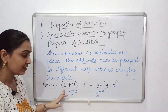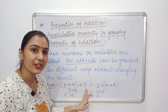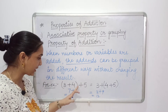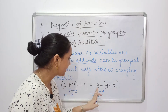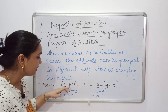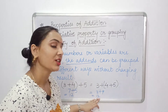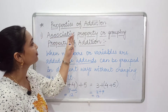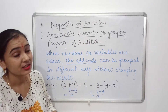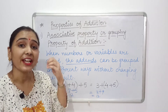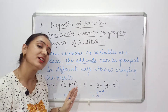For example, here 3 plus 4 are grouped in a bracket and then 5 is added to them. And here 4 and 5 are grouped and 3 is added to them. Both sides give the same result. So this is what the associative property of addition says — no matter how the addends are grouped, the result will be the same.